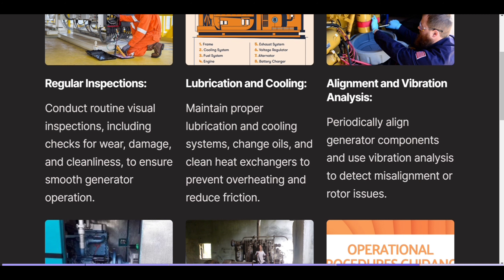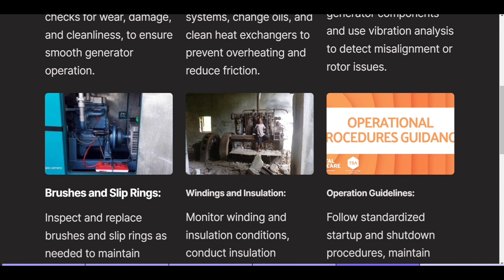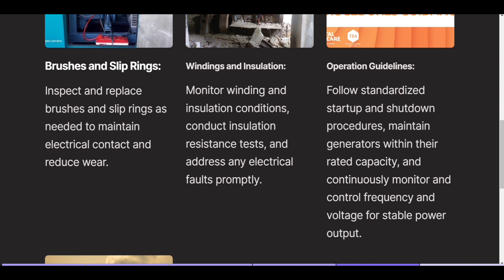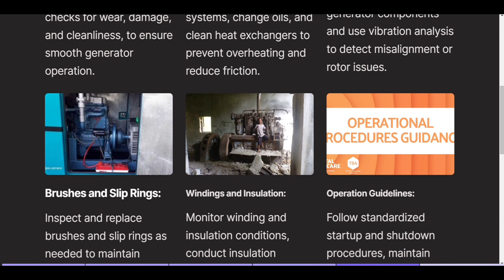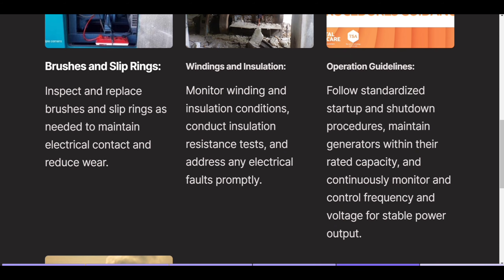Alignment and vibration analysis: periodically align generator components and use vibration analysis to detect misalignment or rotor issues. Brushes and slip rings: inspect and replace brushes and slip rings as needed to maintain electrical contact and reduce wear. Windings and insulation: monitor winding and insulation conditions, conduct insulation resistance tests, and address any electrical faults promptly.